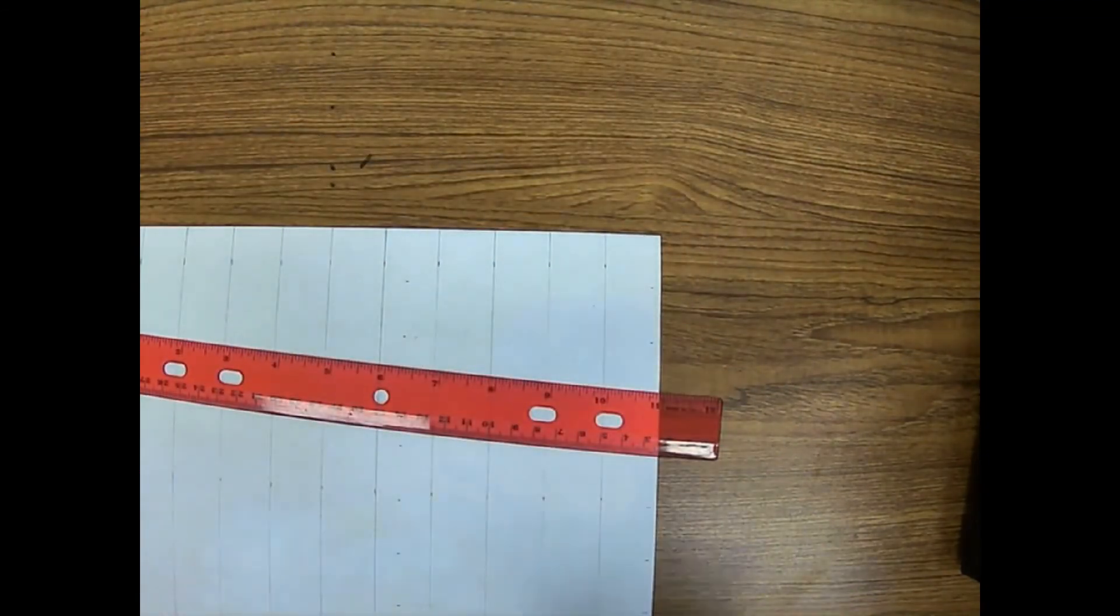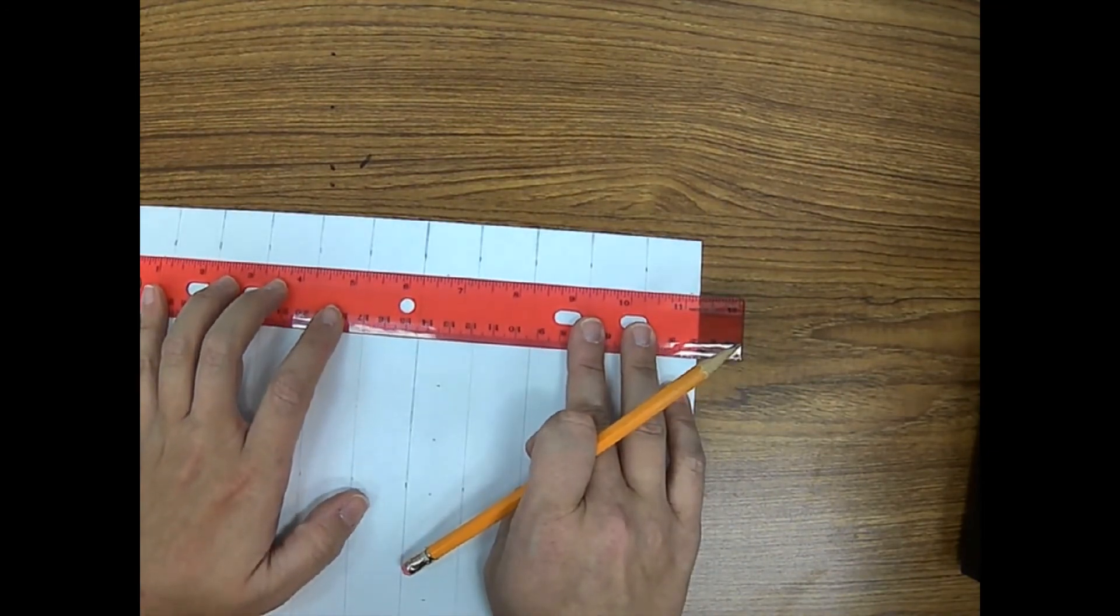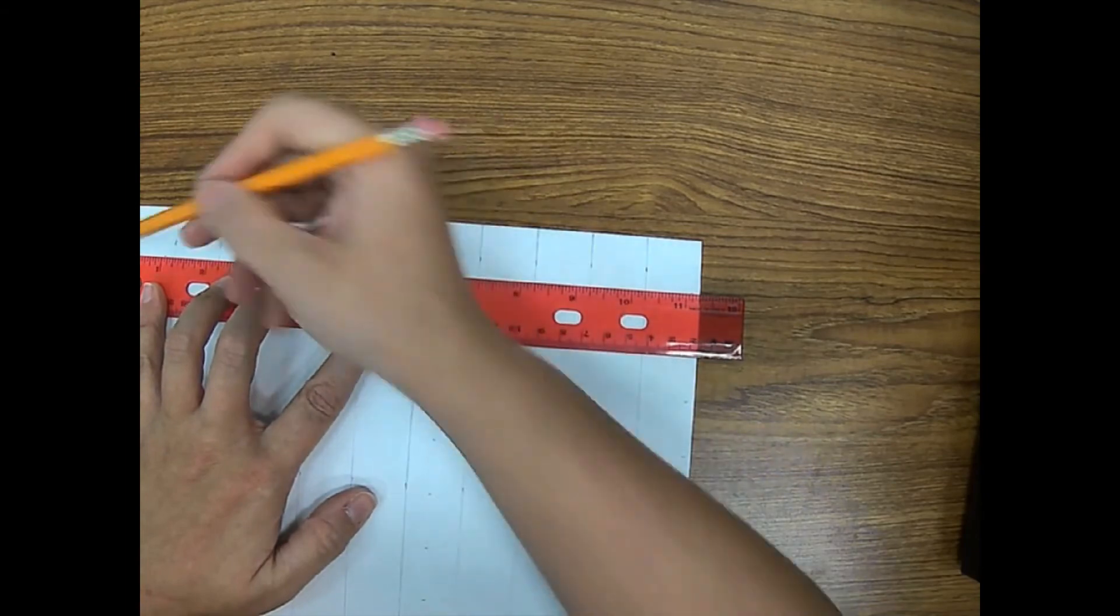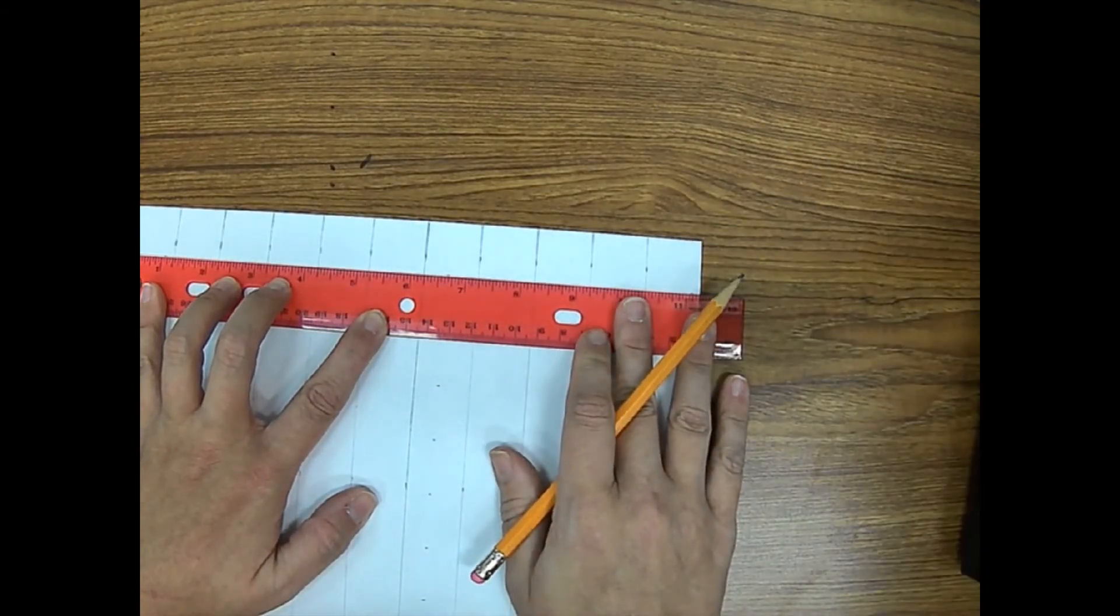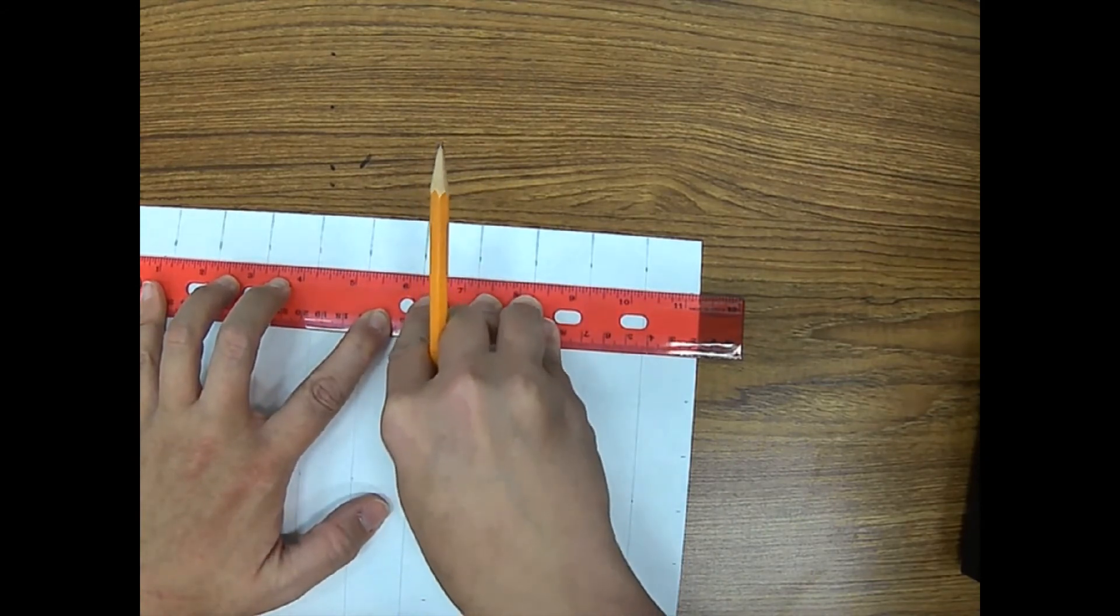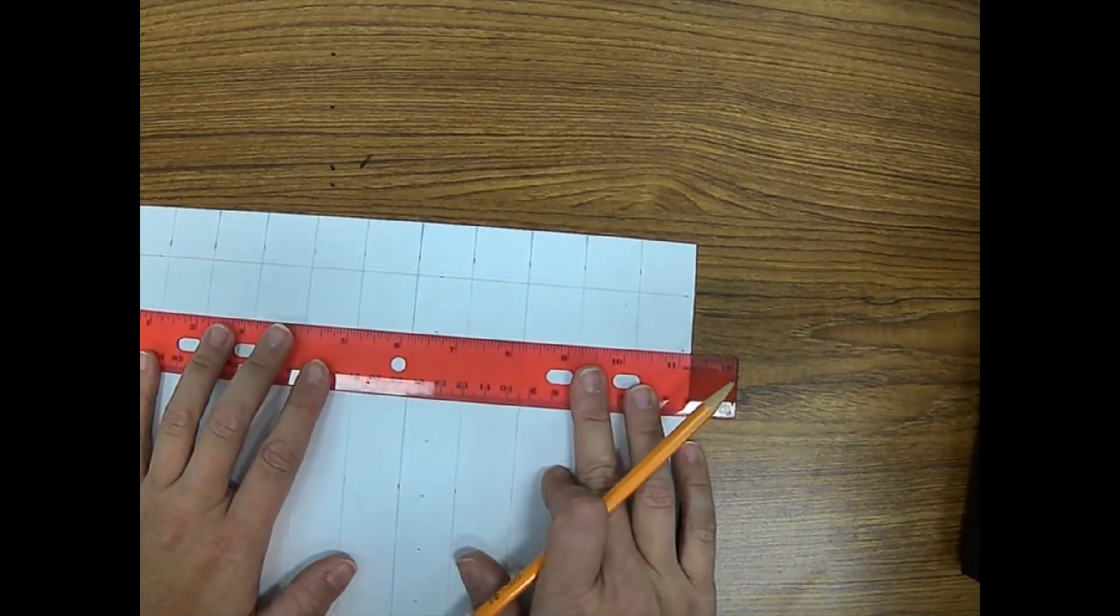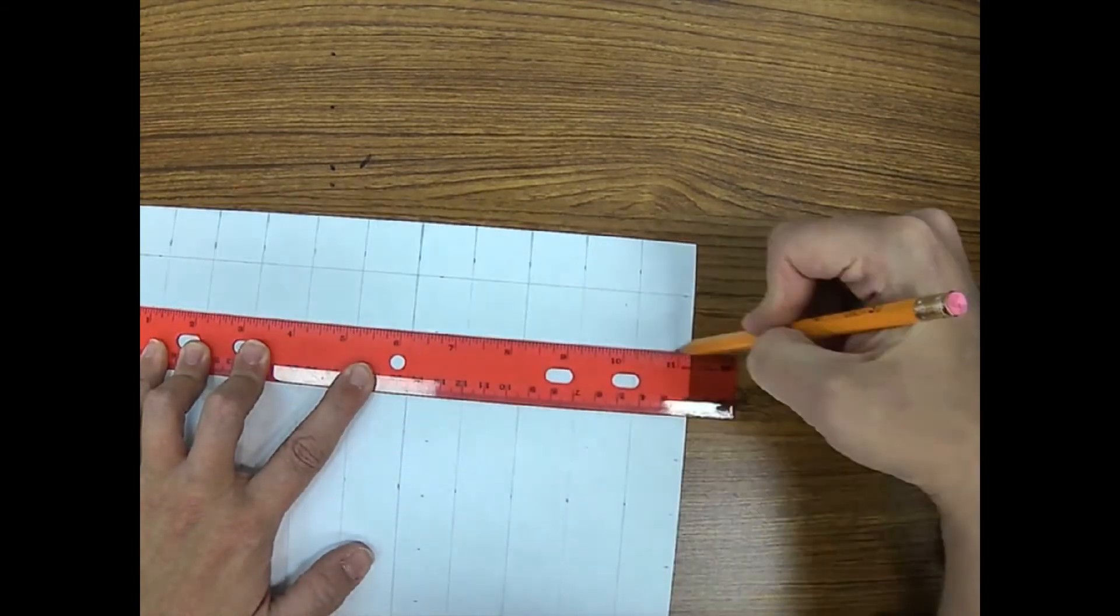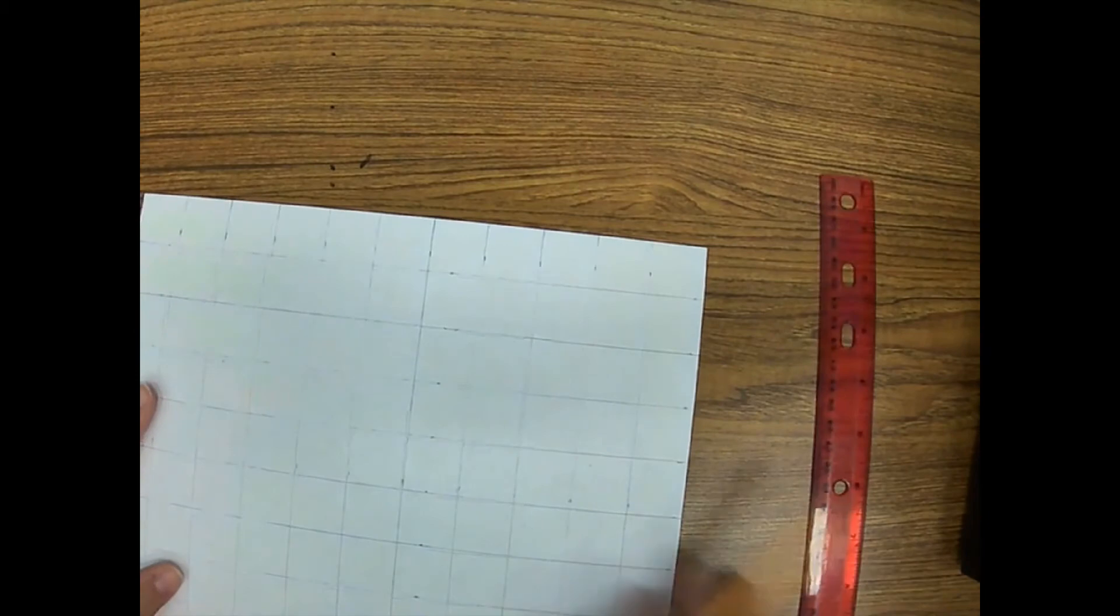Flip your paper. Now we're going to do the same process where you line the ruler up on all three little dots and you draw a line, a light line. Make sure you're holding that ruler down tight. You don't want it to wiggle. Go down and do it again and keep going until you're done.